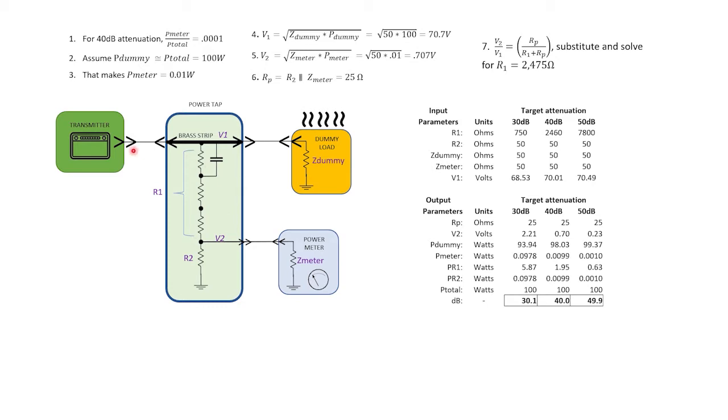Now note that the power tap is in parallel with the dummy load but its impedance is high enough to not have a significant effect on what the transmitter sees for total connected impedance. And if you are inclined to learn the math behind how the resistor values are calculated, I'm showing that here as well.